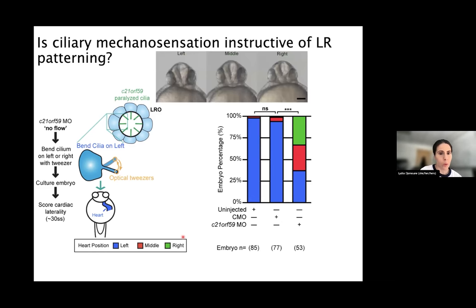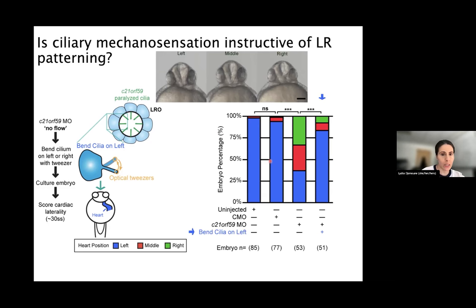In normal embryos you should have proper lateralization — the heart should always be on the left side. In embryos with paralyzed cilia you have complete randomization, because you need proper LRO flow for proper lateralization. But in embryos with paralyzed cilia when you tweeze only one cilium for one hour, you can rescue proper lateralization and drive the heart to the left — strongly demonstrating that LRO ciliary mechanosensation is instructive for left-right patterning.